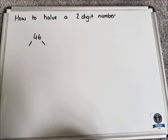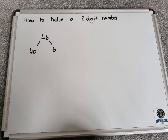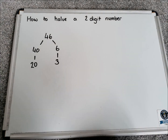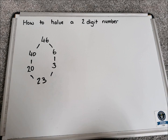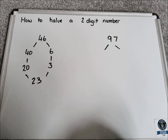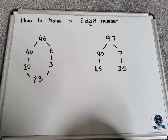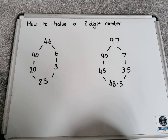Moving on to a recap of halving with a two-digit number using the same partitioning strategy. Starting with 46: partition it into 40 and 6, then half each section. Half of 4 is 2, so half of 40 is 20. Half of 6 is 3. Bringing those together gives 23. For a trickier example with 97: partition into 90 and 7. Half of 90 is 45 and half of 7 is 3.5. Bringing those together gives 48.5.